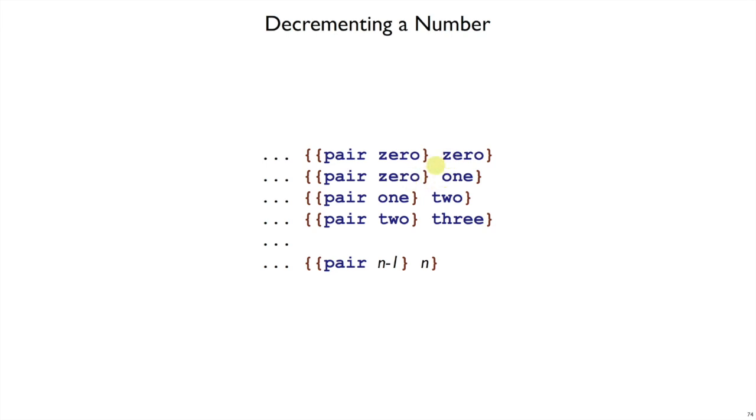We start with 0, 0, then we get 0, 1, because we shifted this 0 over, and then we added 1. And then, if we do it again, we take the 1 and save it, but we add 1 to get 2, and so on. If we do this process n times, then we'll end up with a number n here, but in the first part of our pair, we'll end up with the previous value. And that's how we kind of undo a call to f. We actually do a call to f and then forget about it. We just use the previous answer that we had.